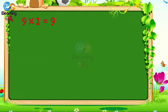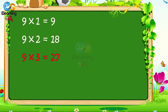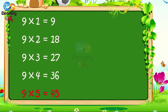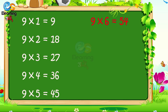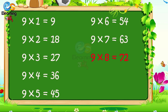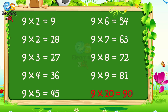9 1s are 9. 9 2s are 18. 9 3s are 27. 9 4s are 36. 9 5s are 45. 9 6s are 54. 9 7s are 63. 9 8s are 72. 9 9s are 81. 9 10s are 90.